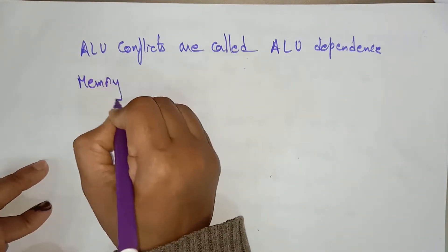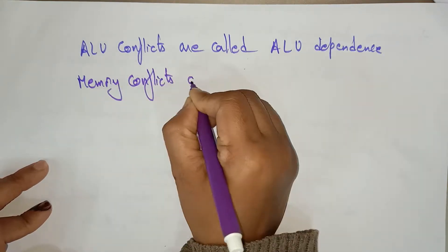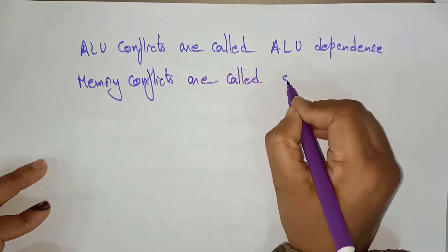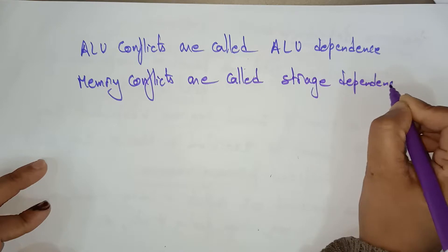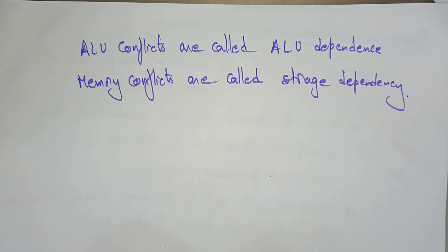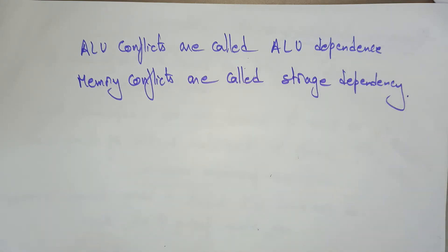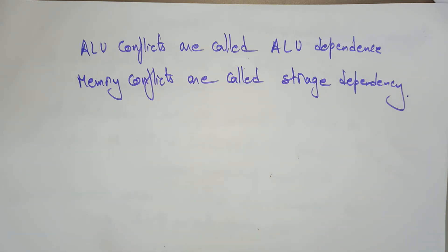When you talk about memory conflicts, they are called storage dependency. Whenever storage dependencies are present, memory conflicts will occur. So whenever different statements execute in parallel, even though they are independent of each other, if there are not sufficient processing resources they cannot be executed. This point has to be remembered. Thank you.